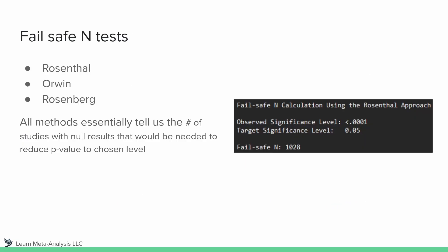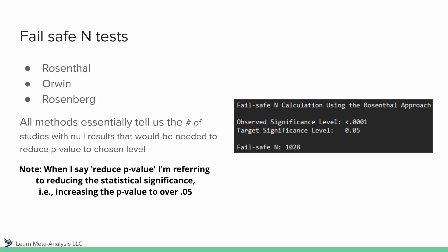There are also a number of fail-safe N tests. Three major approaches are one by Rosenthal, one by Orwin, and one by Rosenberg. Sample output from metafor gives you the fail-safe N number. All of these tests are essentially looking to tell us the number of studies with null results that would be needed to reduce our p-value to our chosen level — in this case, 0.05. Using the Rosenthal approach, it says we would need 1,028 studies with null results to reduce our significance level to less than 0.05. This is an interesting statistic — I've seen it reported and also criticized — but it helps us better understand our sample.